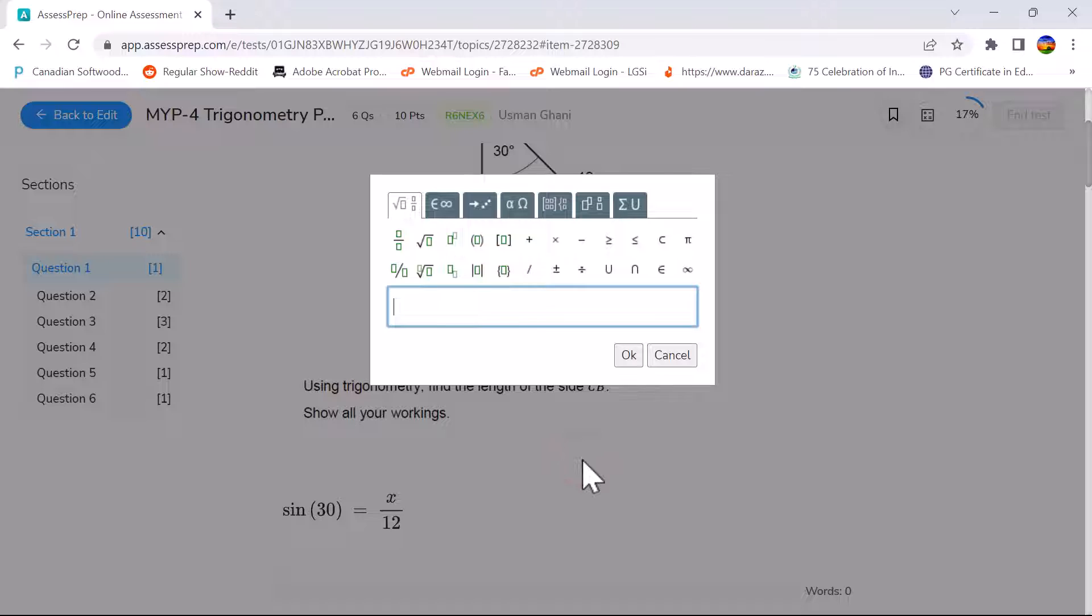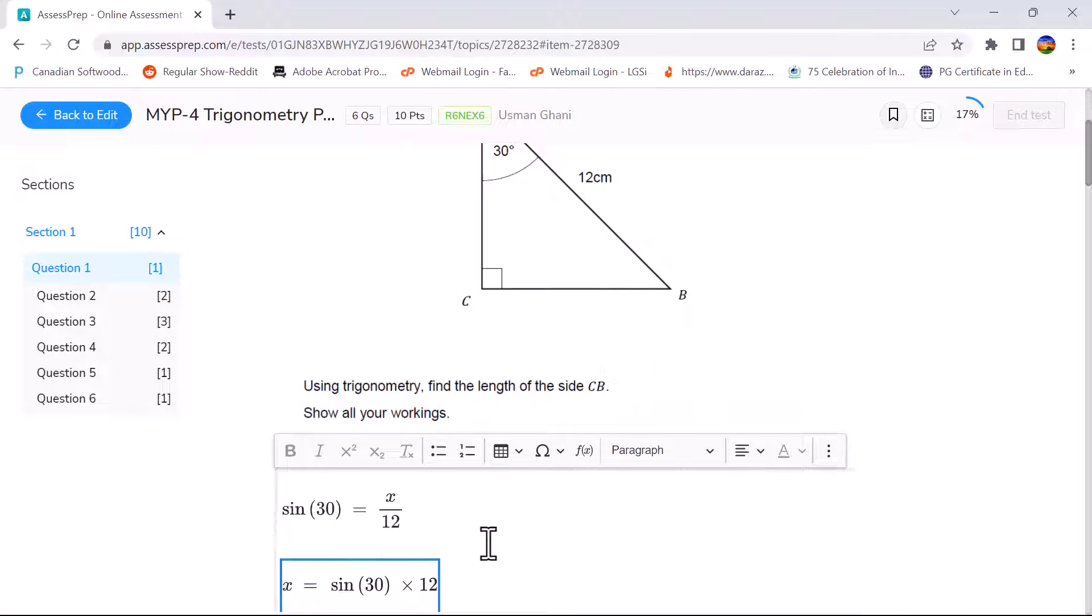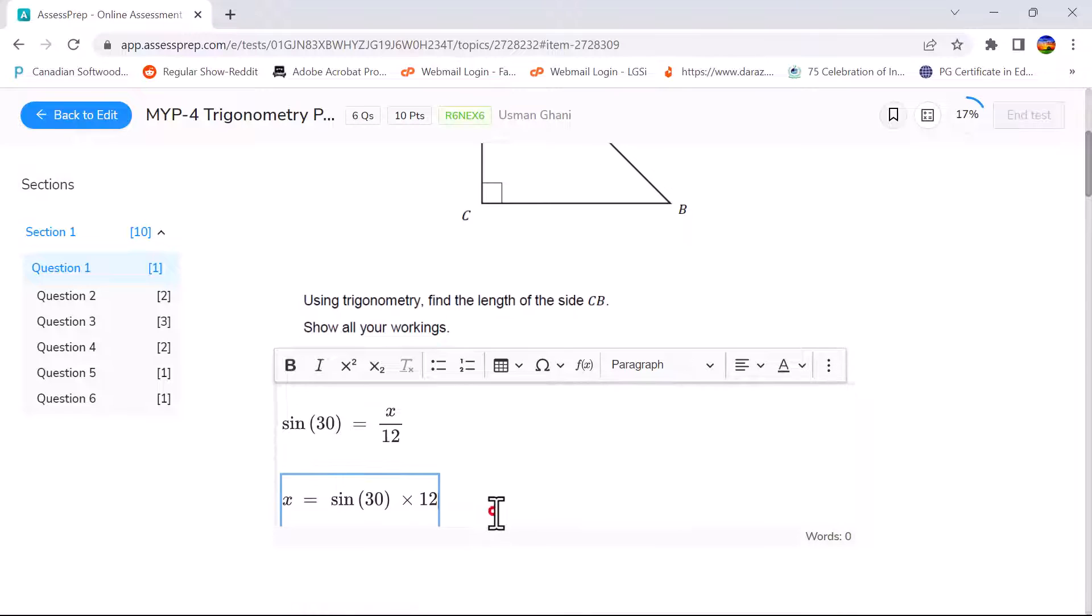Now if I want to show more steps I'll once again go to insert math and I will simply type in X equals to sine of 30 multiply by 12. If I want to insert the proper sign for multiplication it's better that I use this symbol. I'll just press ok and this is going to show the final step before I calculate my final answer.